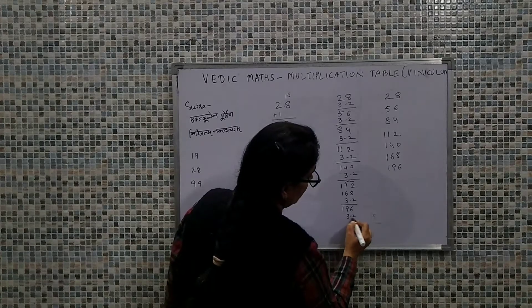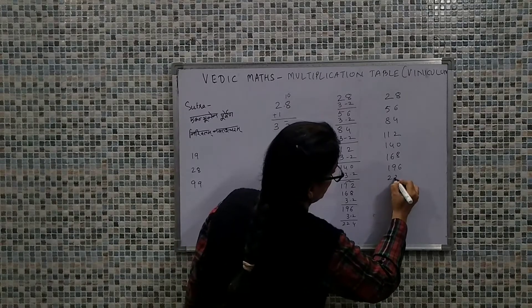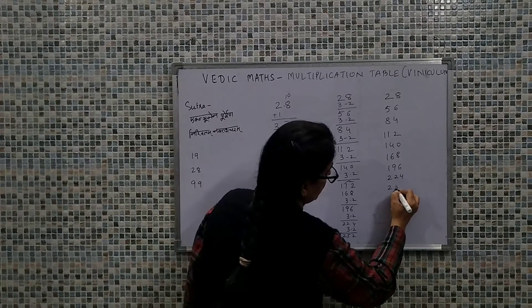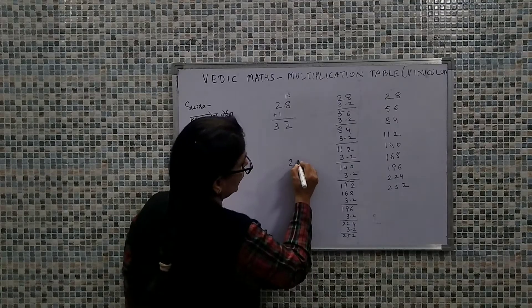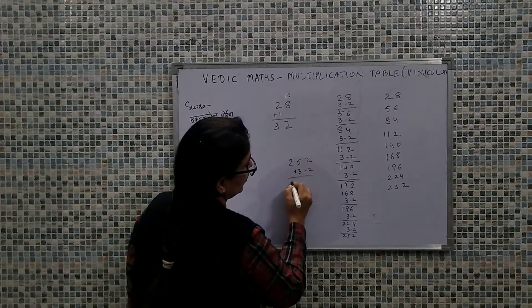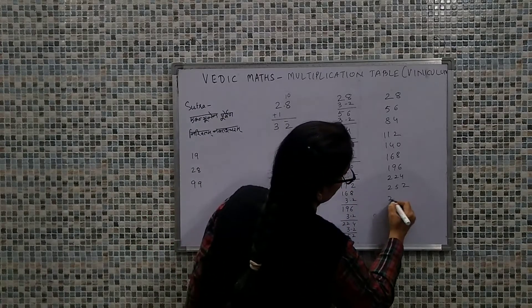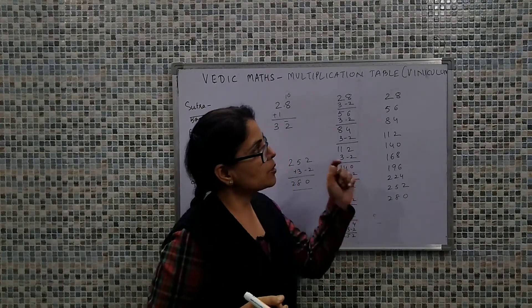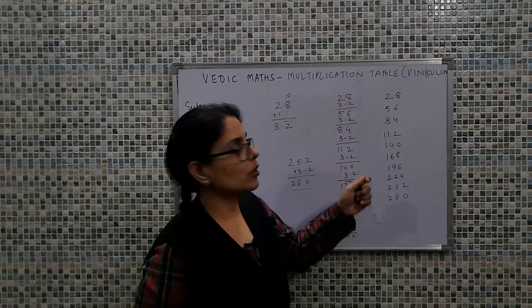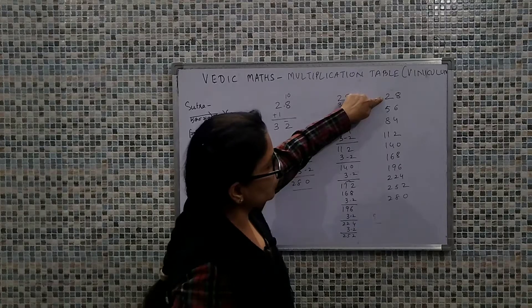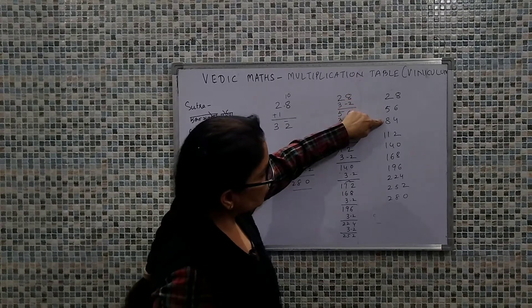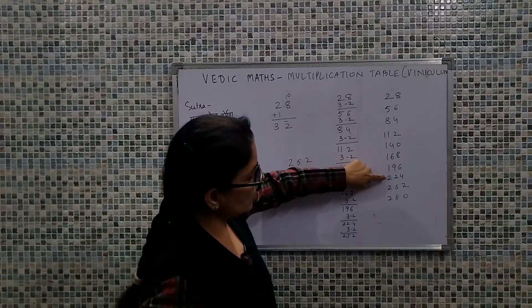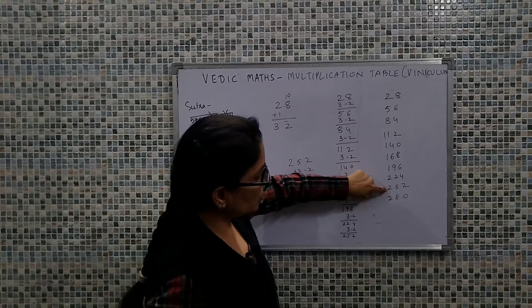Plus 3 minus 2, so that is 224. Plus 3 minus 2, that's 252. Plus 3 minus 2, next I'll write it over here, plus 3 minus 2, that's 280. So this is very simple. What we did is in the ones place we did minus 2 and in the tens place we did plus 3. So 28 ones are 28, twos are 56, threes are 84, fours are 112, fives are 140, sixes are 168, sevens are 196, eights are 224, nines are 252, and tens are 280.